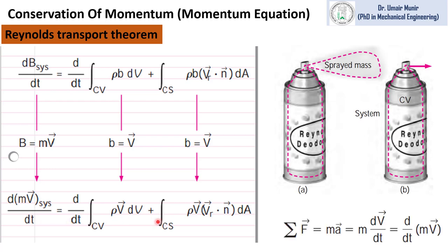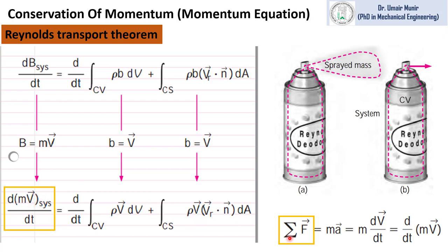As we know that according to Newton's second law of motion, the sum of forces acting on a body is equal to m times acceleration. By the definition of acceleration, acceleration is the rate of change of velocity. We can write this equation in the form which states that the sum of forces acting on a body is equal to the rate of change of momentum. So in the momentum equation we can replace this term with the sum of forces acting on the body.